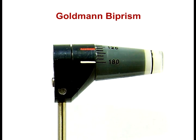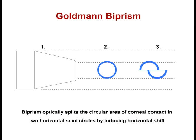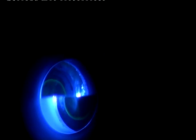The probe tip is common to all models. It consists of a doubling prism which is used to aplanate the cornea, and it optically splits the circular area of corneal contact into two horizontal semicircles by inducing a horizontal shift. On touch, the tear film appears as a bright yellow spot which turns into semicircular arcs when the tonometer is moved forwards. When a diameter of 3.06 mm is flattened, the semicircles interlock.